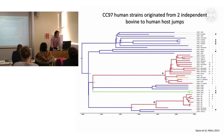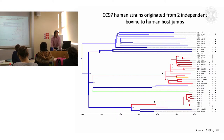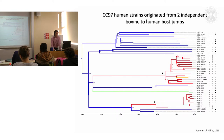The ancestral state for the CC97 clone looks to be of bovine origin, as you can see by the blue labelling. This suggests that there have been at least two independent host jumps from cows, most likely, into humans — one occurring somewhere along this branch and one occurring somewhere along this branch.